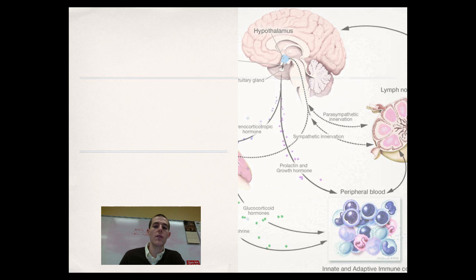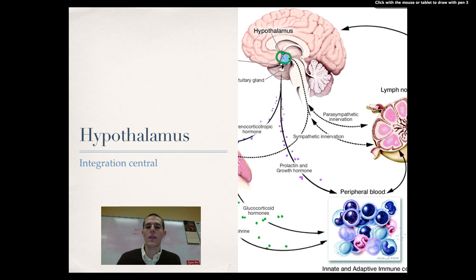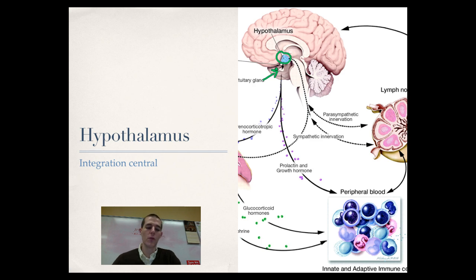Starting with the hypothalamus itself — we're going to call it integration central today. If you look at this brain that has been cut in half, it is right there. The pituitary gland, which we're going to be talking about quite a bit today, hangs off of it. The basic function of the hypothalamus is that it receives signals from the nervous system. Signals will come in, get processed in the brain, or go directly to the hypothalamus, which then works on the endocrine system through the secretion of hormones or stimulation of the pituitary gland. So the hypothalamus is the point in our body that integrates our nervous system with an endocrine response.